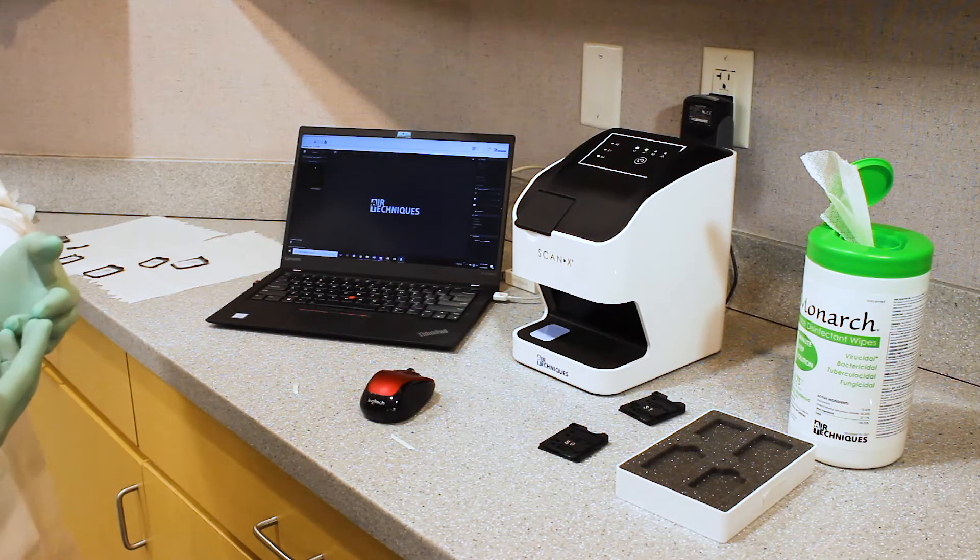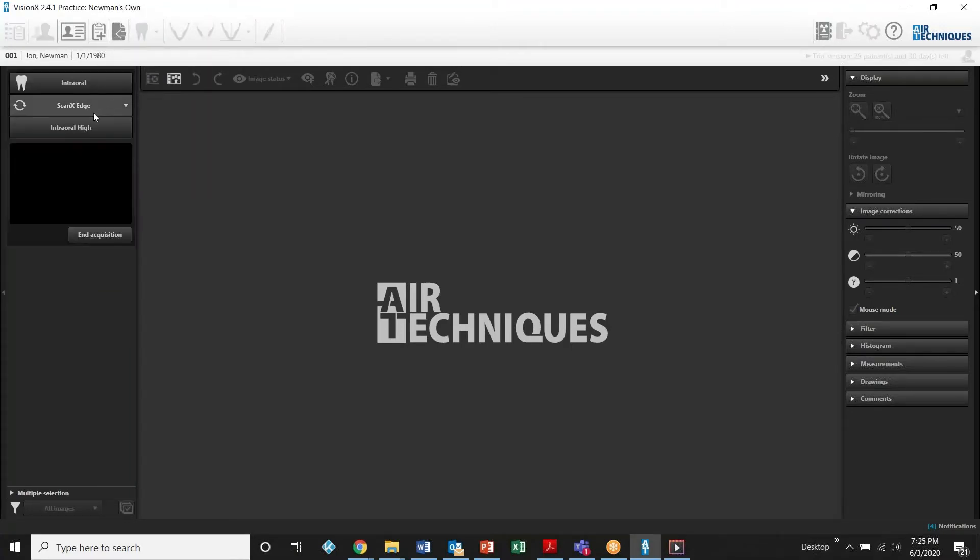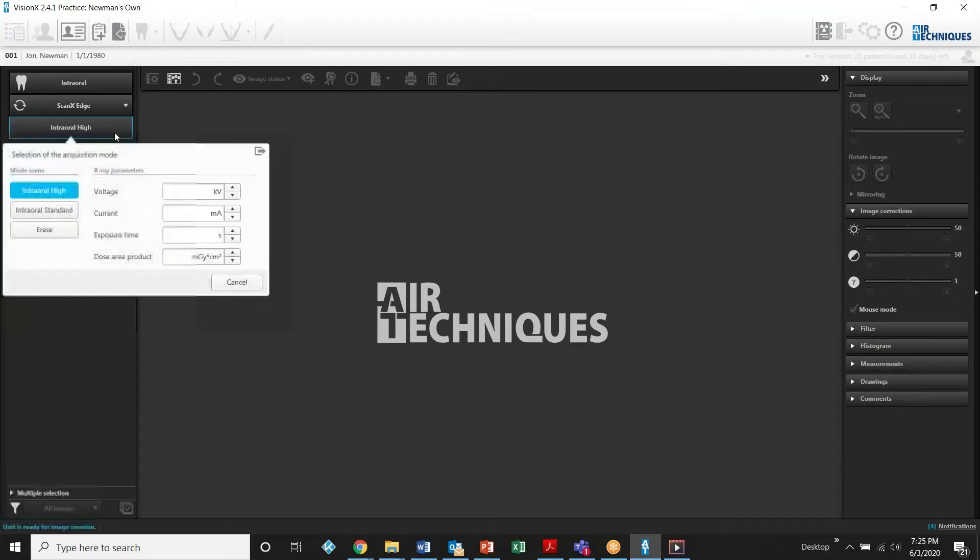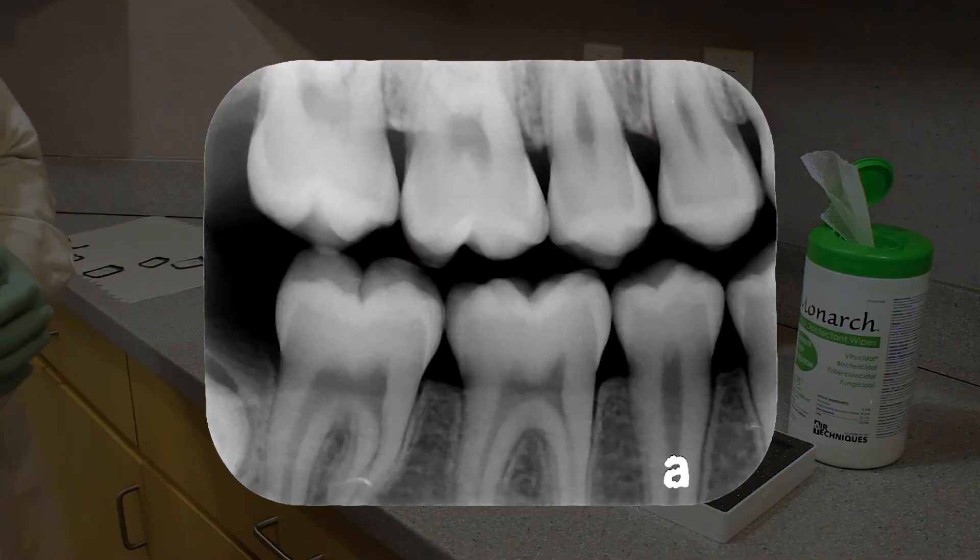This machine has two available scan modes for us to scan at. I happen to choose Interall High, which is the highest resolution available on this machine, but there is also a quicker acquisition mode called Interall Standard. We suggest using Interall High because it does produce the best image quality possible out of the machine.